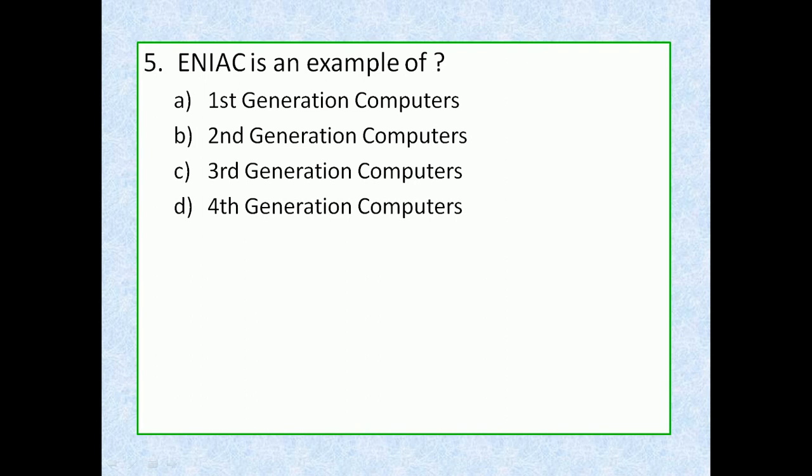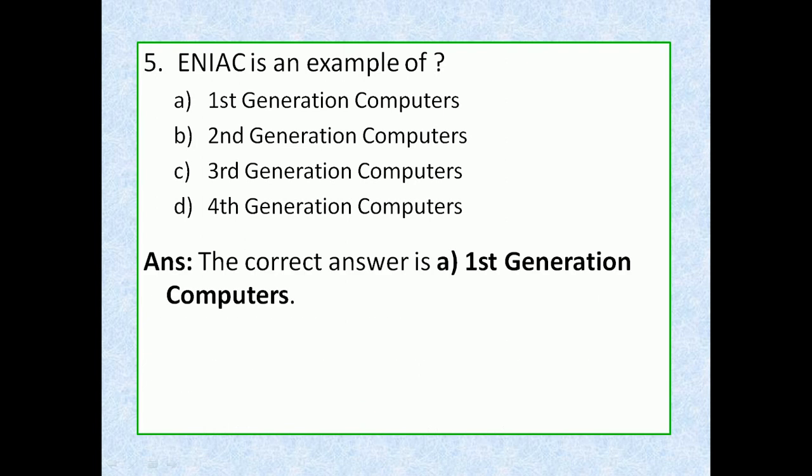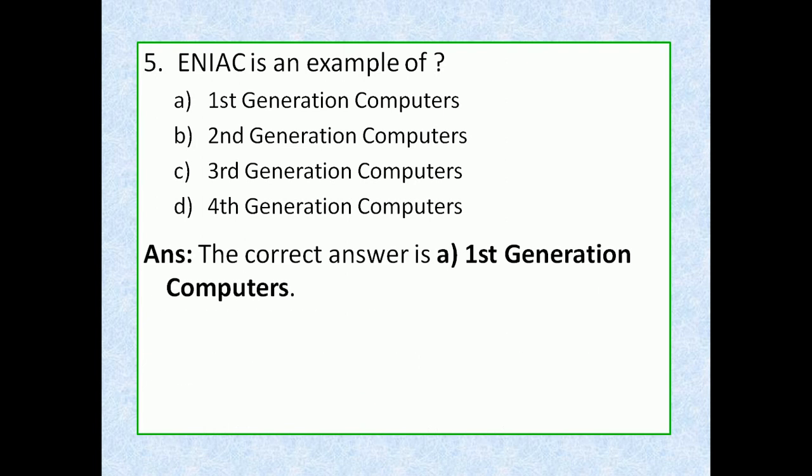Question 5: ENIAC is an example of — option A: first generation computers, option B: second generation computers, option C: third generation computers, option D: fourth generation computers. The correct answer is option A, first generation computers. ENIAC was one of the first electronic general-purpose computers. First generation computers were characterized by their use of vacuum tubes, which were large and unreliable.